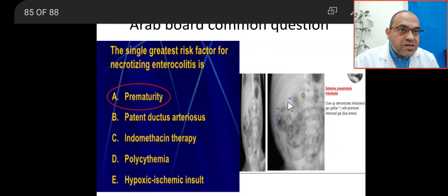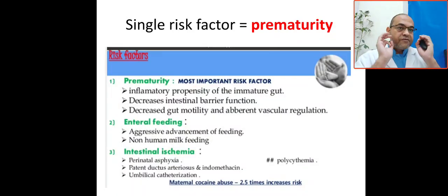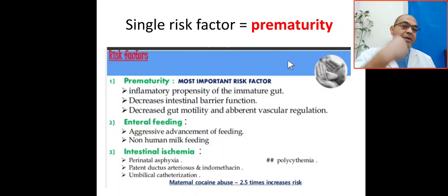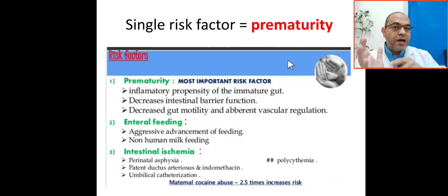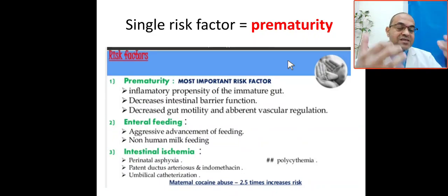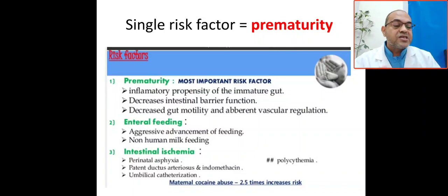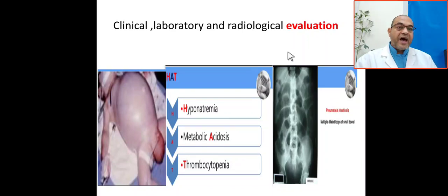The single risk factor is prematurity. Other risk factors include premature formula — such as advancing feeds or non-human milk feeds — and intestinal ischemia from perinatal asphyxia, PDA, and polycythemia. Also, maternal cocaine use increases the risk 2.5 times, and umbilical catheters are also a risk factor for necrotizing enterocolitis.